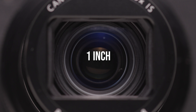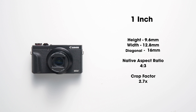One-inch sensors aren't as common as the rest we'll be covering, but it's worth mentioning because you'll see these sensors in compact point-and-shoot cameras, as well as prosumer drones like the DJI Mavic Air 2S and the Phantom 4.